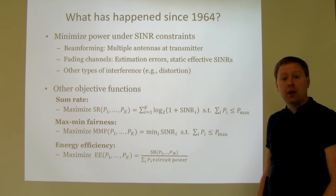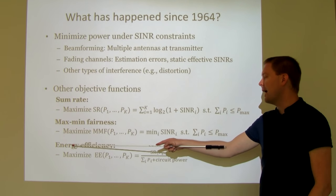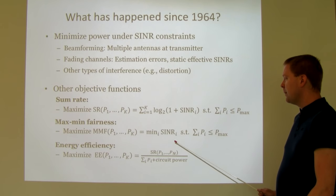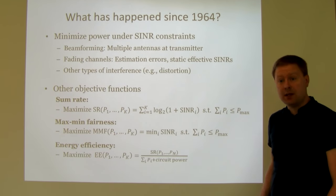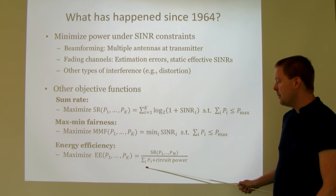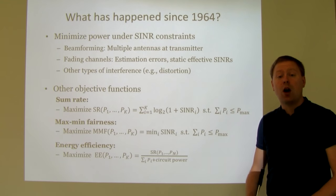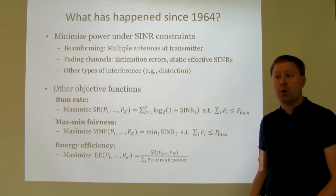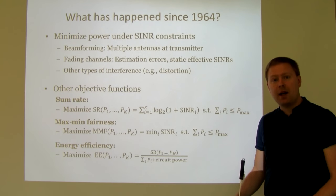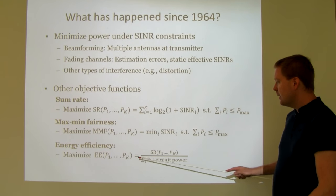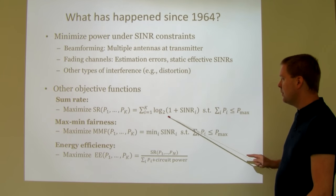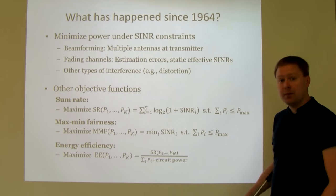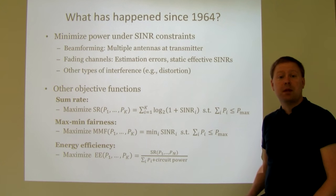A somewhat different objective is energy efficiency, measured as the sum rate divided by the power needed to achieve it. The denominator includes the sum of all transmit powers plus what is called circuit power or hardware-consumed power — the power needed for digital baseband processing and analog hardware. The optimization variables are still p1 through pK, the transmit powers, which appear in both the sum rate expression and the denominator. This represents roughly 50-60 years of literature on optimizing wireless communication systems.